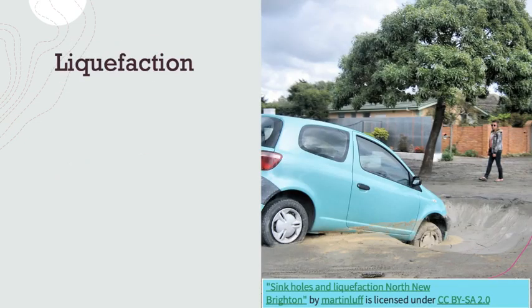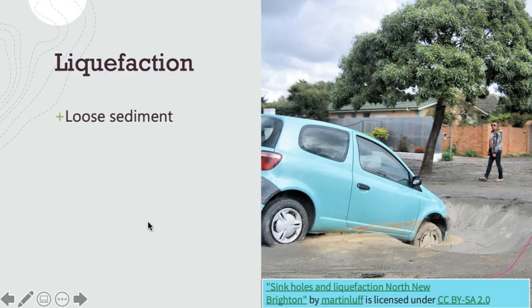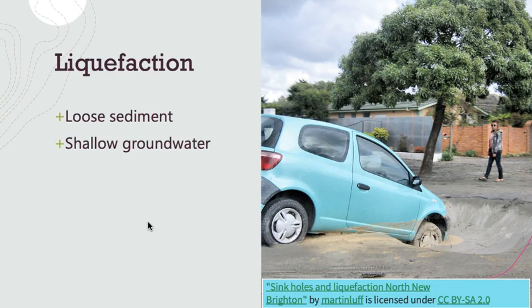Liquefaction happens where there is loose, porous sediment in a shallow groundwater table. If the sediment is shaken with enough intensity, it compacts under its own weight, forcing the groundwater to the surface, which saturates and liquefies the sediment. This, in a sense, makes the sediment turn into quicksand.